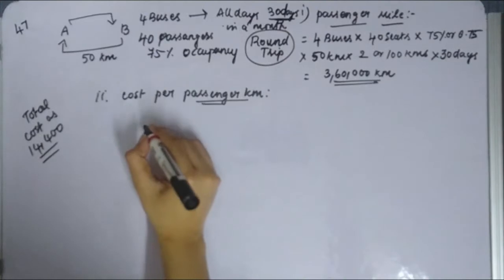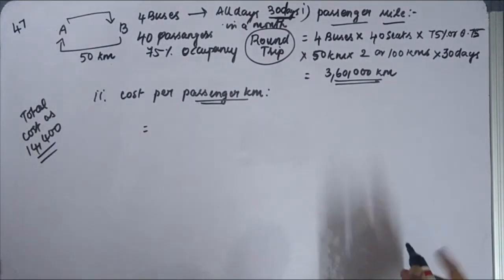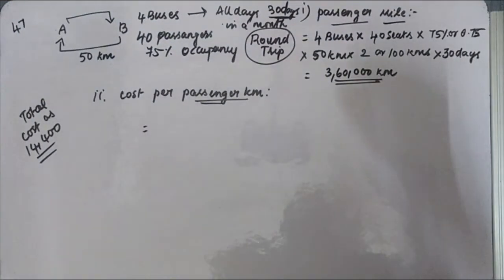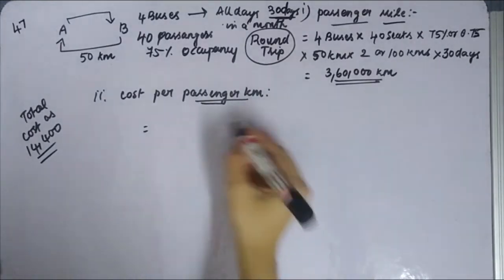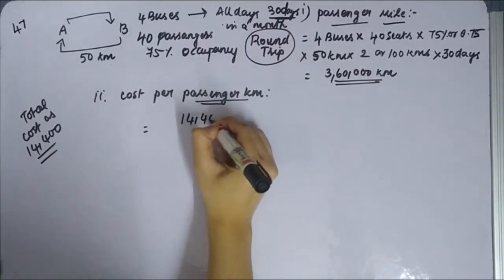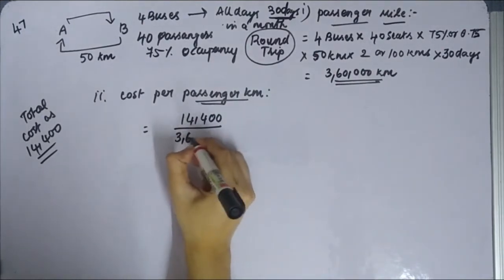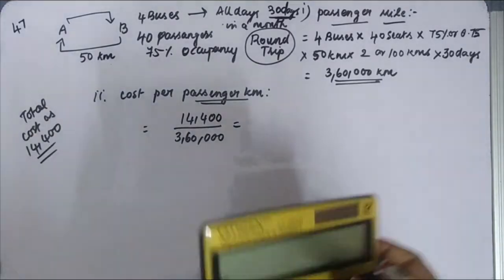So, data number, total cost is 14,400 divided by passenger mile is 3,60,000 is your passenger mile.